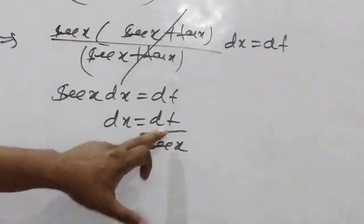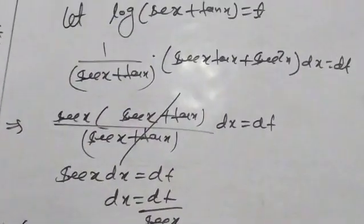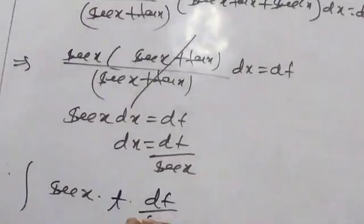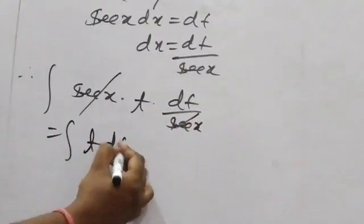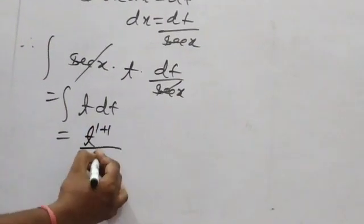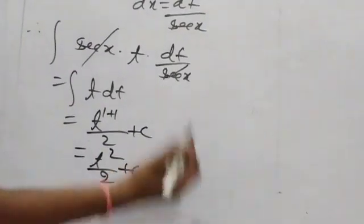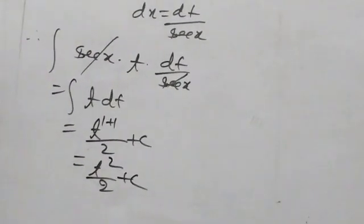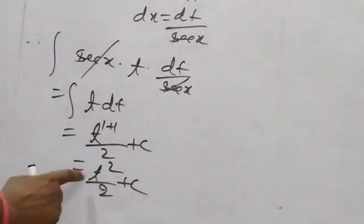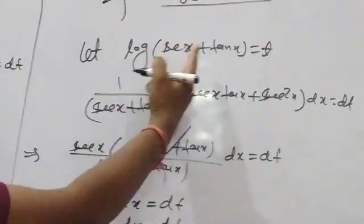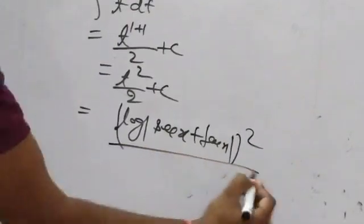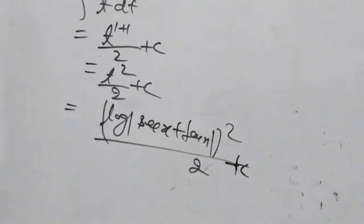Now the integral becomes: sec x · T · (dT/sec x) = T dT. Integration of T dT = T²/2 + C. Since the answer must be in terms of x, substitute back T = log(sec x + tan x): answer is [log(sec x + tan x)]²/2 + C.